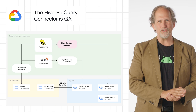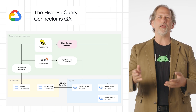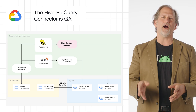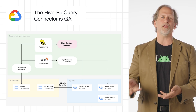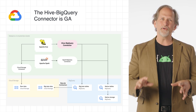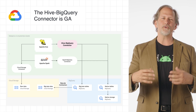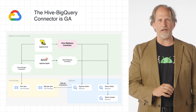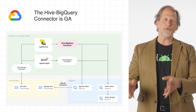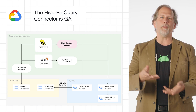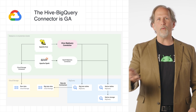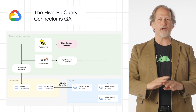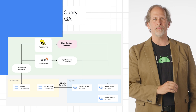We announced the public GA release of the Hive BigQuery connector, an open source connector that lets Apache Hive workloads read and write to BigQuery and BigLake tables. The underlying data can be stored either in BigQuery native storage or in open source data formats on cloud storage. Whether you're fully migrating from Apache Hive to BigQuery, or you want both systems to coexist and interact together, this new connector covers a wide range of use cases.